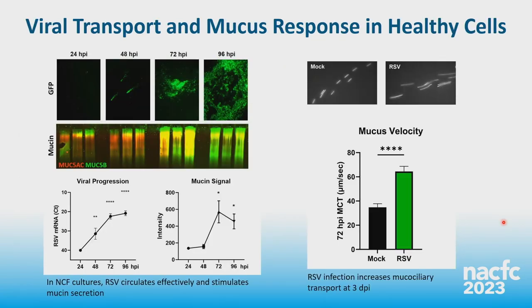RSV does not have a strong tropism for goblet cells — mostly ciliated cells are infected, as is also true for SARS-CoV-2. Scanning electron microscopy shows the apical region of infected cultures with a lot of damage to ciliated cells, including fully shed ciliated cells. TEM shows that in mock cells there are very organized cilia and basal bodies, but in infected cells within three days there is cilial damage, disorganization of cilia, popping of the apical membrane, and disorganization of basal bodies — making it very difficult to clear the virus when you have so much damage to ciliated cells.